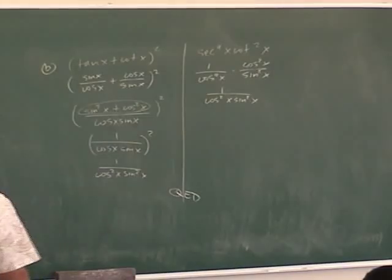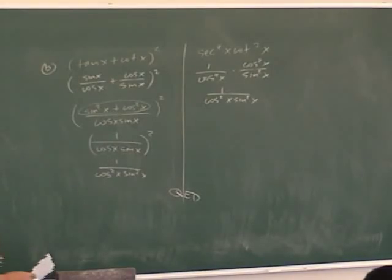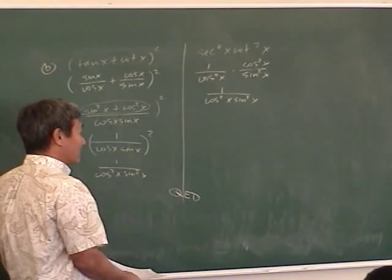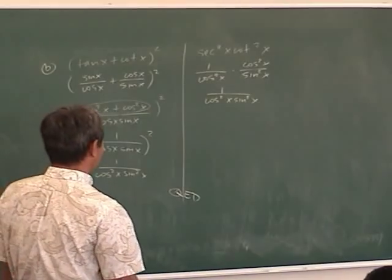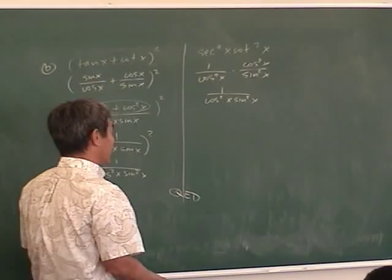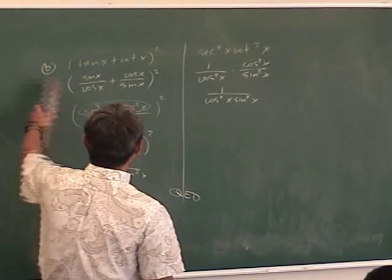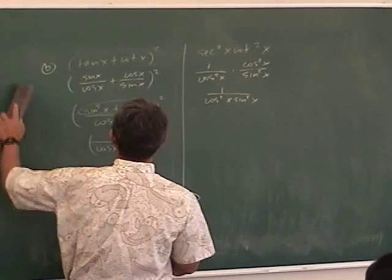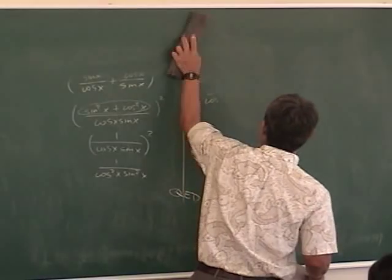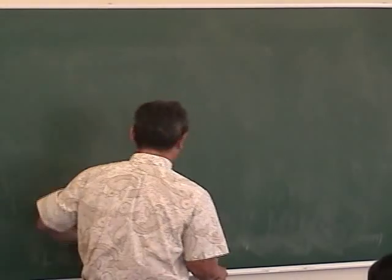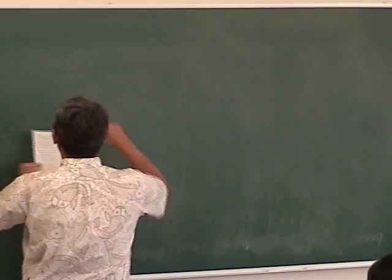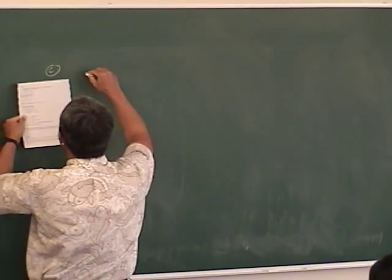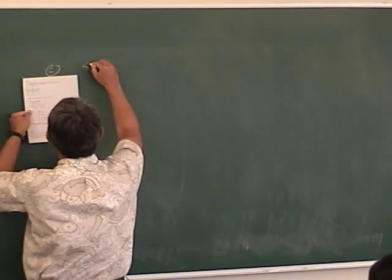The key is you've got to do something. Some of you aren't even doing anything — that's the problem. If you leave it blank on a quiz or test, I have no choice. At least change everything to sines and cosines — that's the minimum you should do. On a good day you might get one point; on a bad day, nothing. At least do some algebra.